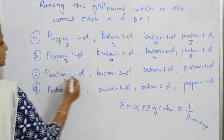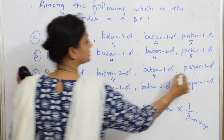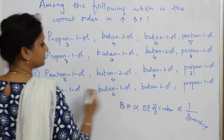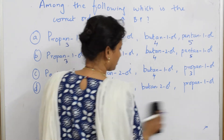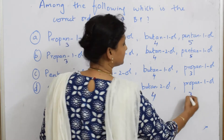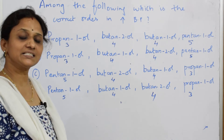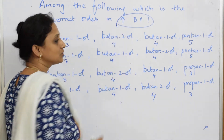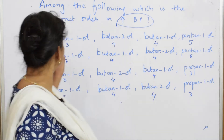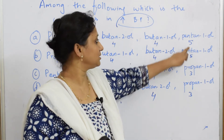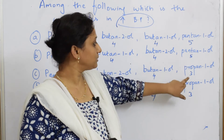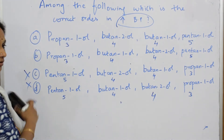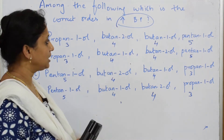Looking at the options: one has 5, 4, 4, 3 — and another has 5, 4, 4, 3. Now, I said it should be increasing boiling point, so the maximum should be at the end. Here also, maximum is at the end, but minimum is not at the start in some options. So I will rule those out — wrong. Because I have to arrange in increasing order.